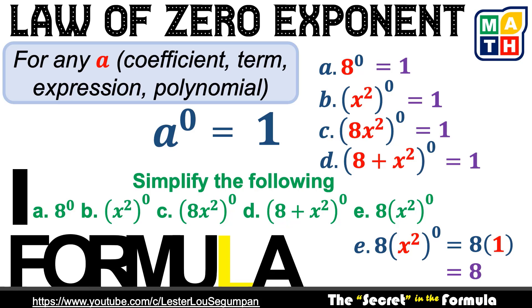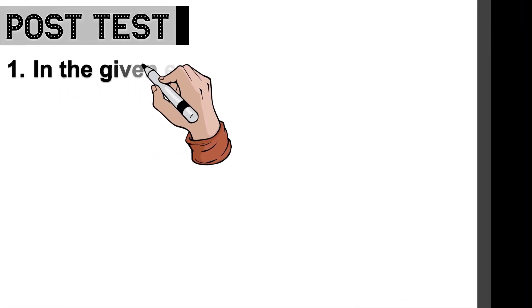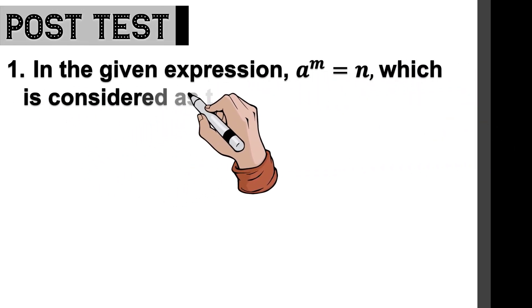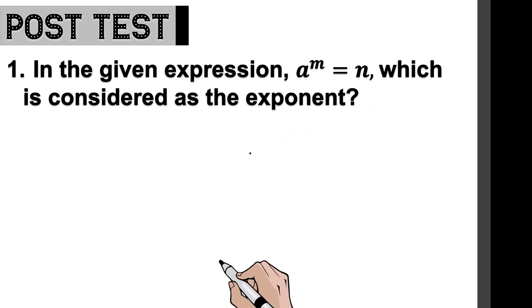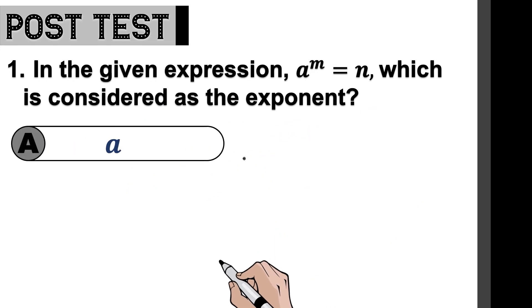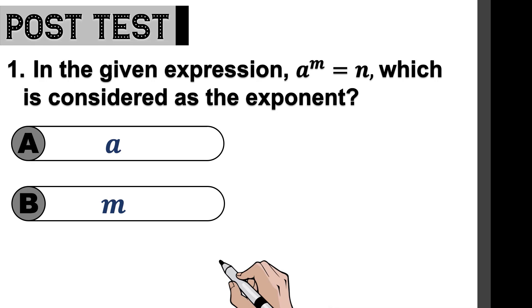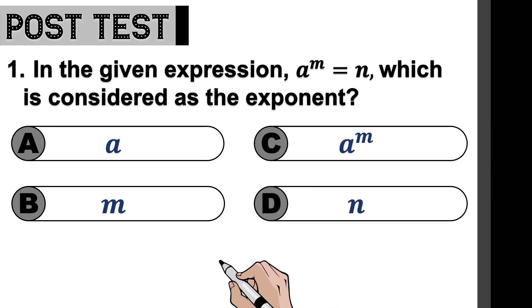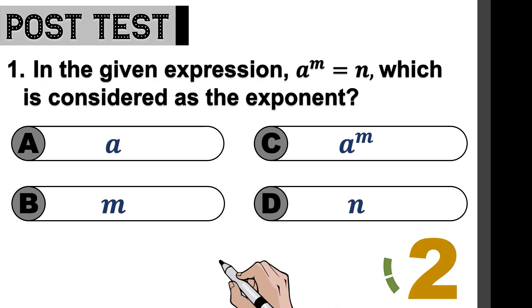Now let us revisit the pre-test questions as our post-test. Number one: In the expression a to the power of m equals n, which is considered as the exponent? A, is it a? B, is it m? C, is it a to the power of m? Or letter D, is it n? Five seconds. Time is up.